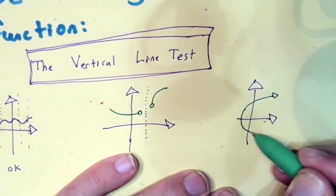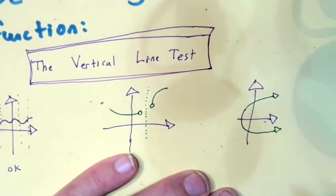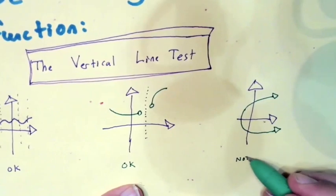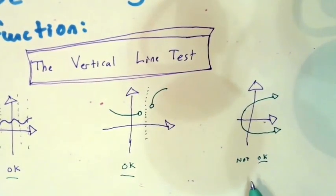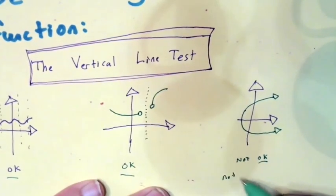So a graph that looks like this is not the graph of a function. I mean, it's a valid graph. There may be times where you want to graph something like this, but it is not the graph of a function.